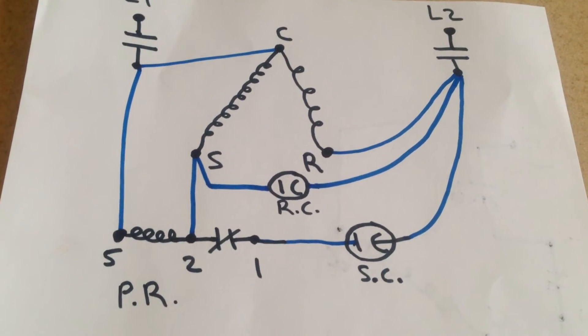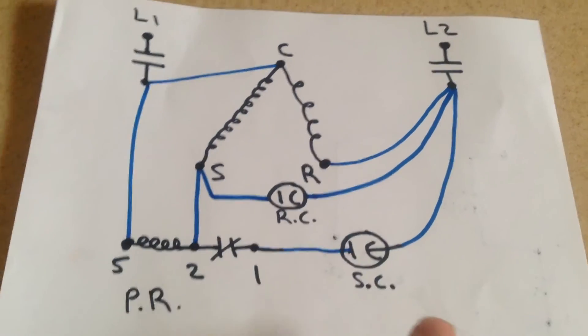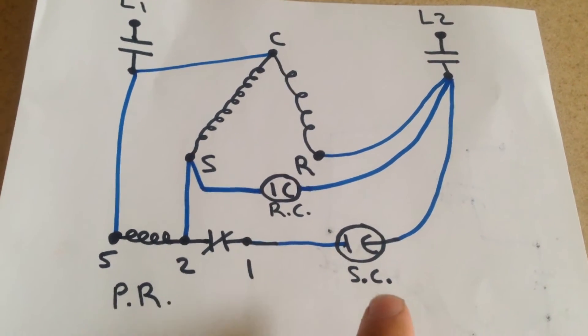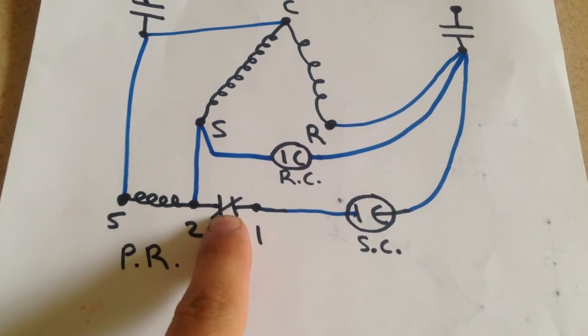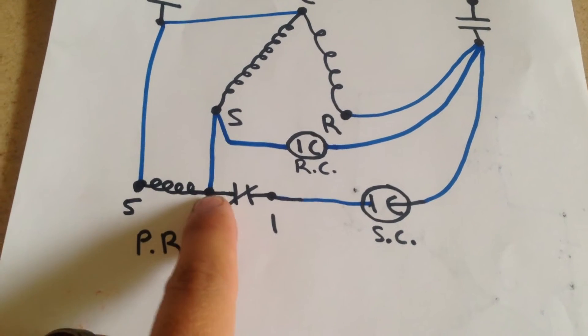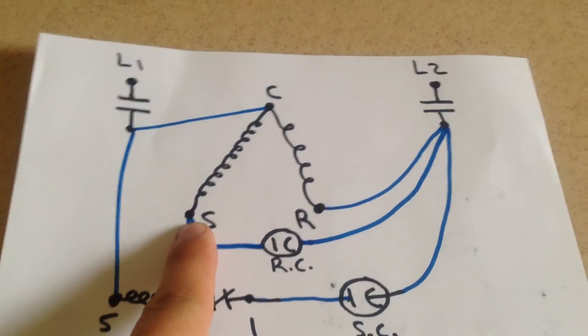But before it gets there, it's going to go in series through the start capacitor. So as you can see now, we have a path from L2 through the start capacitor from number 1 through the normally closed contact and up to the start terminal on our compressor.